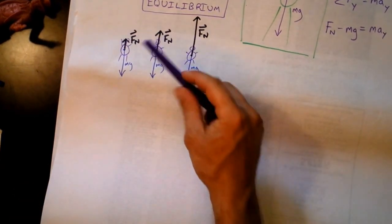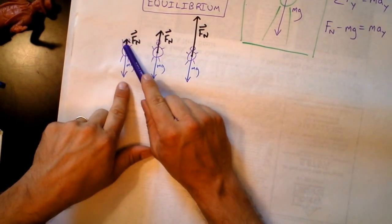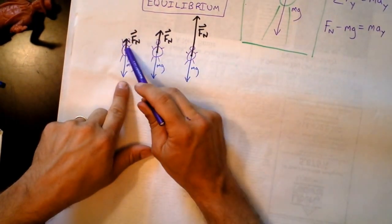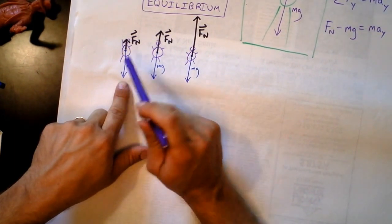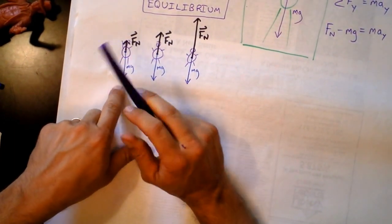If we've got these three situations where you're in an elevator, in this one, the net force—if I add up these two force vectors, I get a force vector,